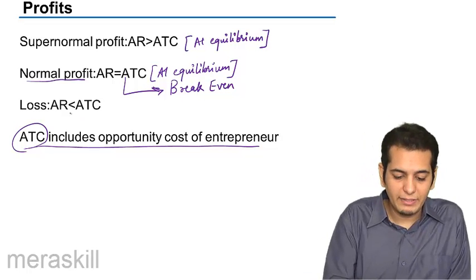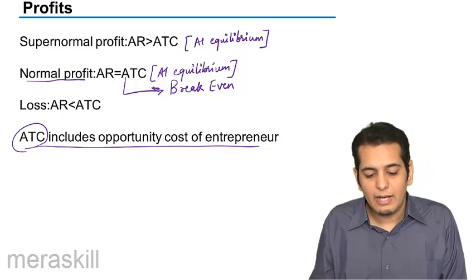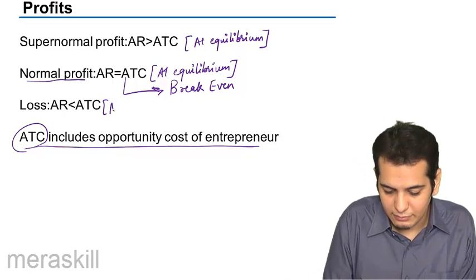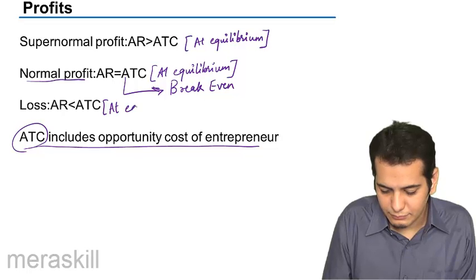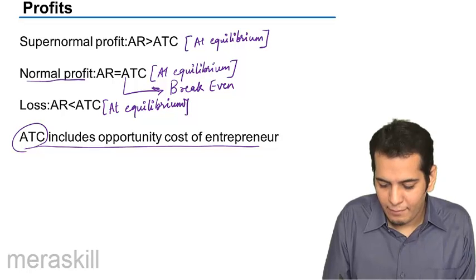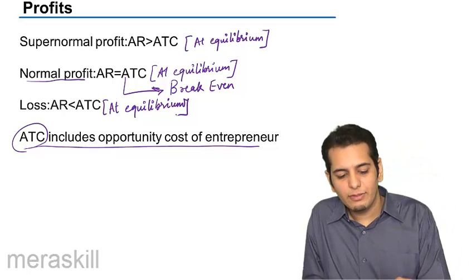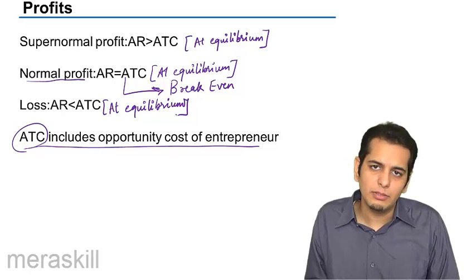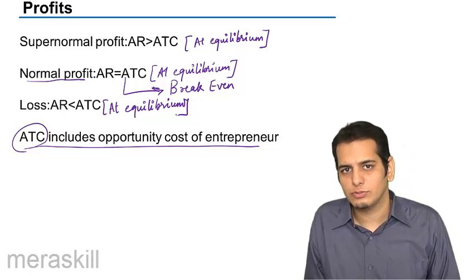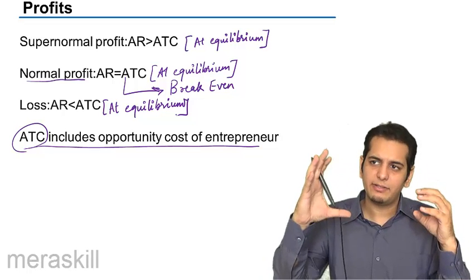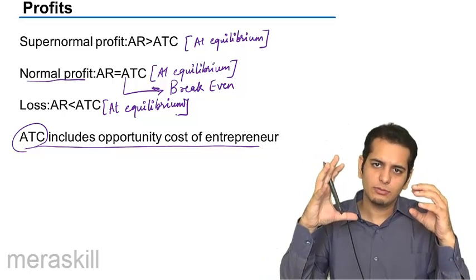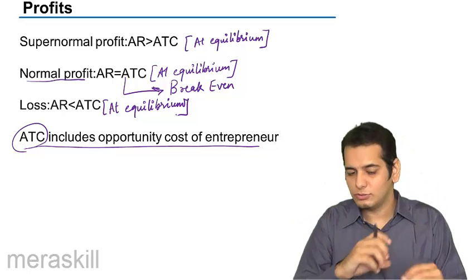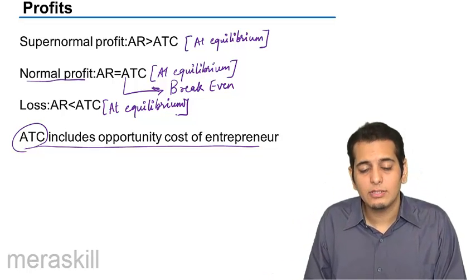The final case is where AR is less than ATC. At the point of equilibrium, if average revenue is less than average total cost, it is very much understandable that the firm will incur losses — your average revenue is less than the average cost, so you are bound to incur losses. Now let's consider each of these cases individually.